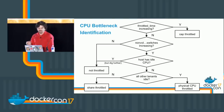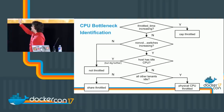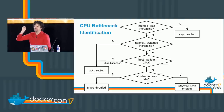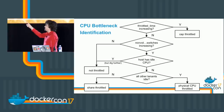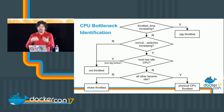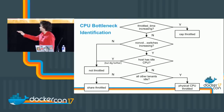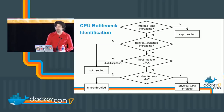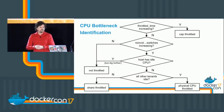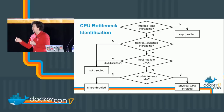I've drawn a flow chart for CPU bottleneck identification. At the top are the easiest things to identify first. Is throttle time increasing? — that only increases if we're cap throttled, so we can address that first. Are we getting non-voluntary context switches? — if not, we're probably not throttled. Do we have idle CPU? And at the bottom, if other tenants are idle or not, it can help identify whether we're share throttled or physical CPU throttled — we may be physical CPU throttled if our container is the only one and we're trying to use more CPU than the host has.